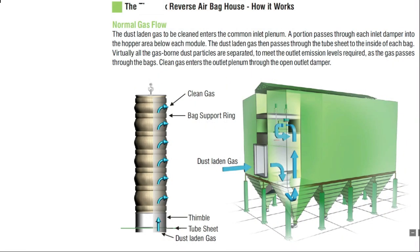How it works: The dust-laden gas to be cleaned enters the common inlet plenum. A portion passes through each inlet damper into the hopper area below each module. The dust-laden gas then passes through the tube sheets to the inside of each bag. Virtually all dust particles are separated to meet the required outlet emission levels. As clean gas passes through the bags, it enters the outlet plenum through the open outlet damper. The blue color arrows in the picture indicate the flow of the gas.